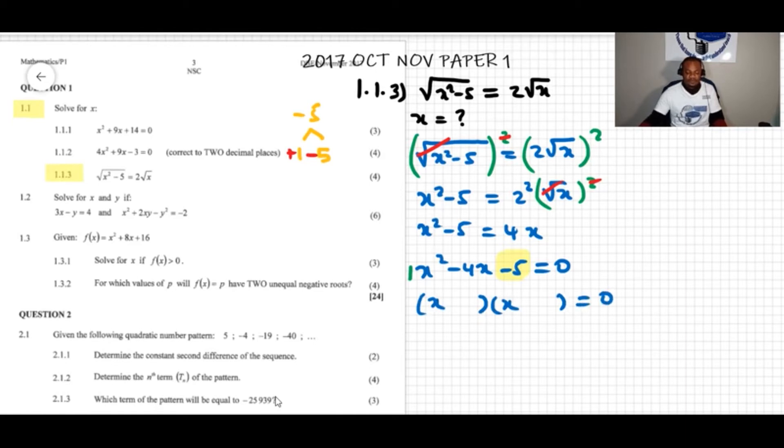And sum in the values of positive 1 and negative 5 there, and then we can solve for x from the multiplication property. So that means x plus 1 equals 0, or x minus 5 equals 0. This means x equals negative 1, or x equals 5.